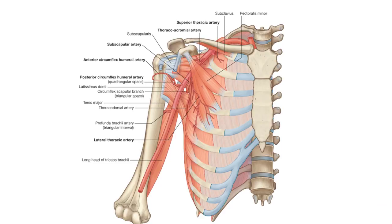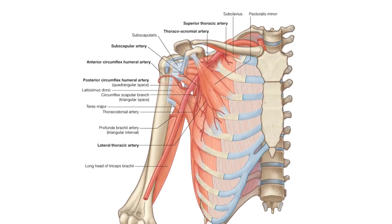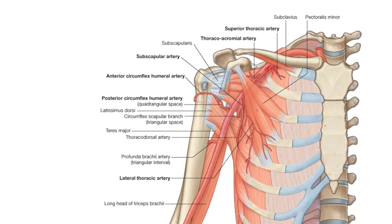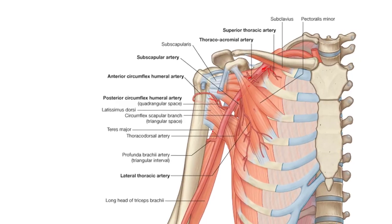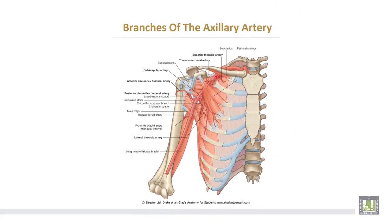In summary: the superior thoracic arises from the first part of the axillary artery; the acromiothoracic and lateral thoracic arise from the second part; while the third part gives the anterior and posterior circumflex humeral arteries along with the subscapular artery.